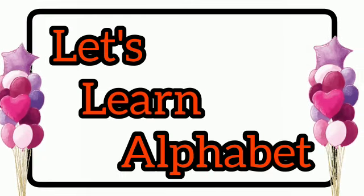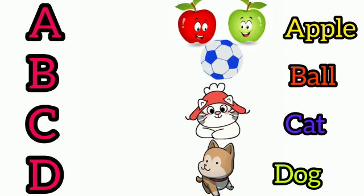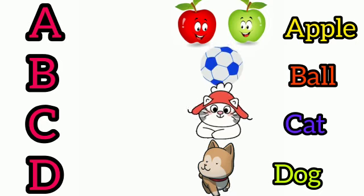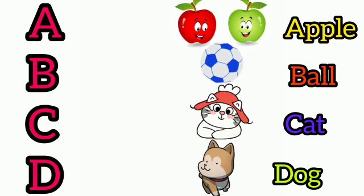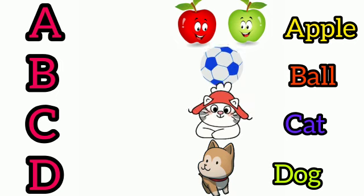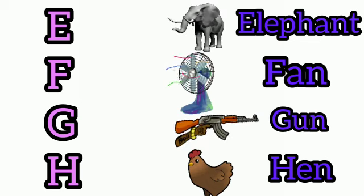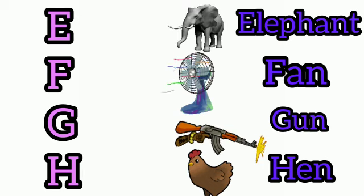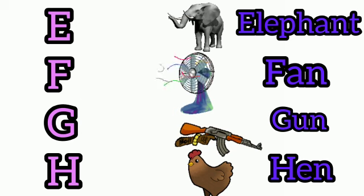Let's learn the alphabet. A for apple, B for ball, C for cat, D for dog, E for elephant, F for fan, G for gun, H for hen.